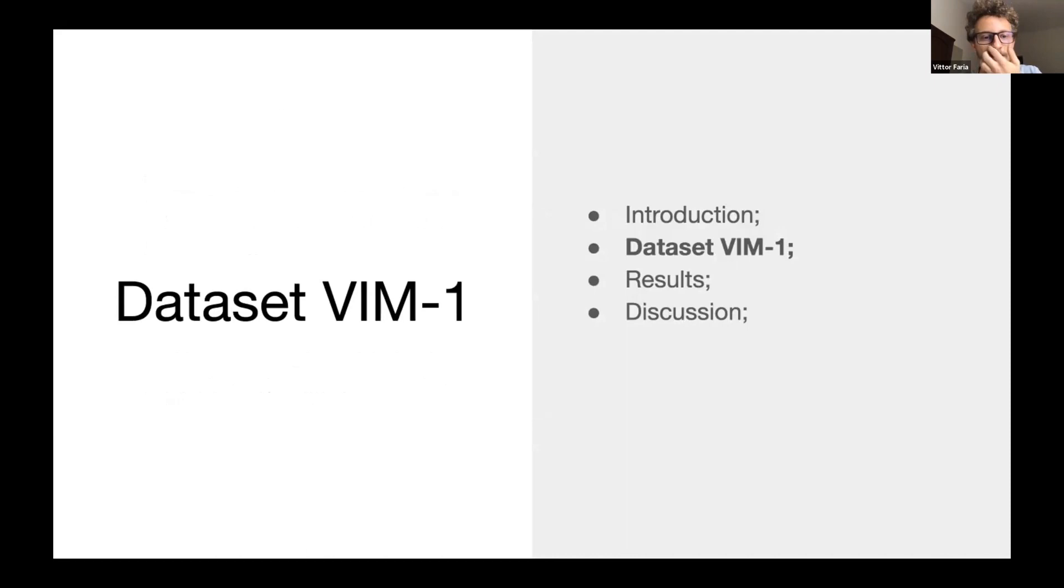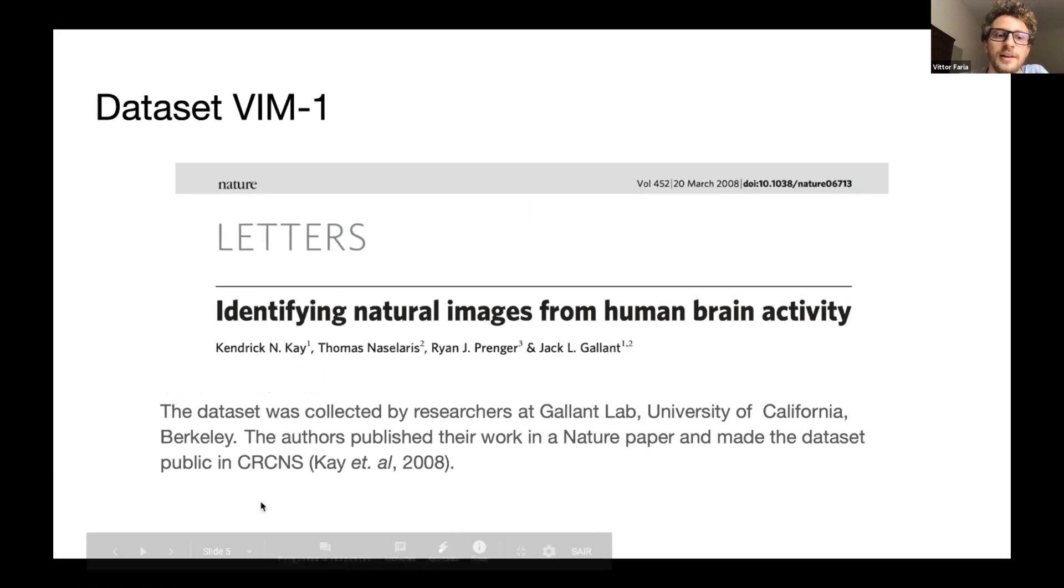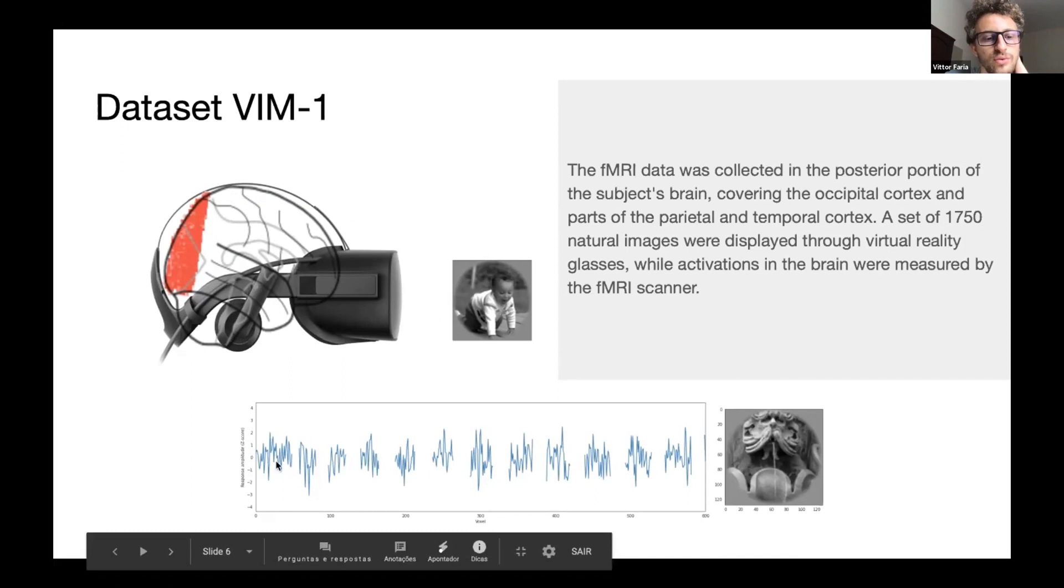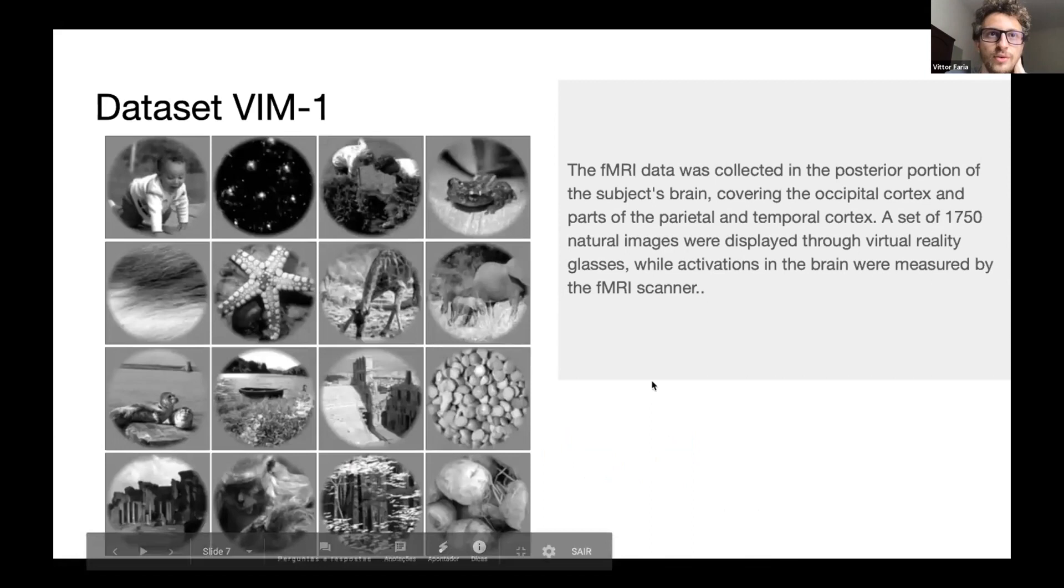I'll show some details about the dataset I used, VIN 1. The dataset was collected by Kendrick Key and Thomas Nacellaris in UC Berkeley. The authors published the findings in a Nature paper in 2008 and made it public in CRCNS. The fMRI data was collected in the posterior portion of the subject's brain covering occipital cortex and parts of parietal and temporal cortex. A set of 8,750 images were displayed through virtual reality glasses while activations to the brain was recorded through fMRI scanner.